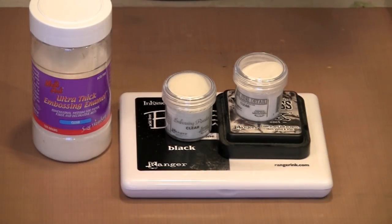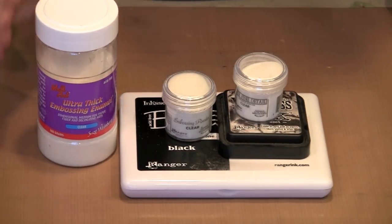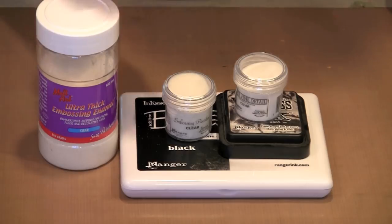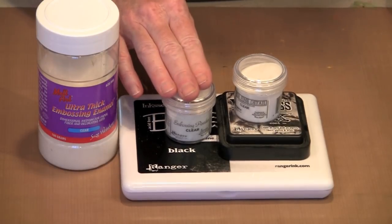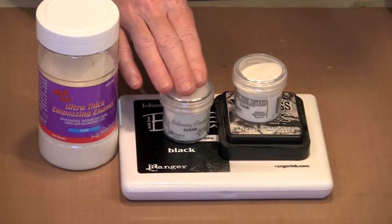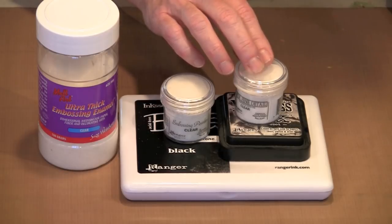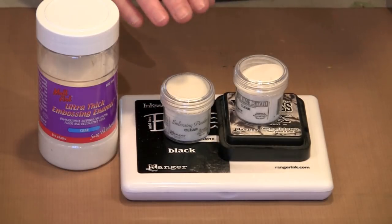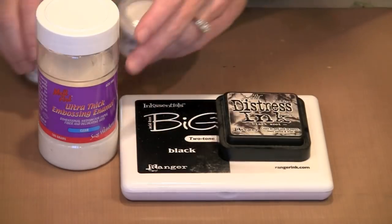At its most basic, embossing powder is nothing more than plastic. The difference between the three that I have here: UD which is ground very coarsely, this is what's called the regular size, it's just the middle size granule, and then there's the ultrafine. Each of these has various applications, but at their heart, they're all plastic.